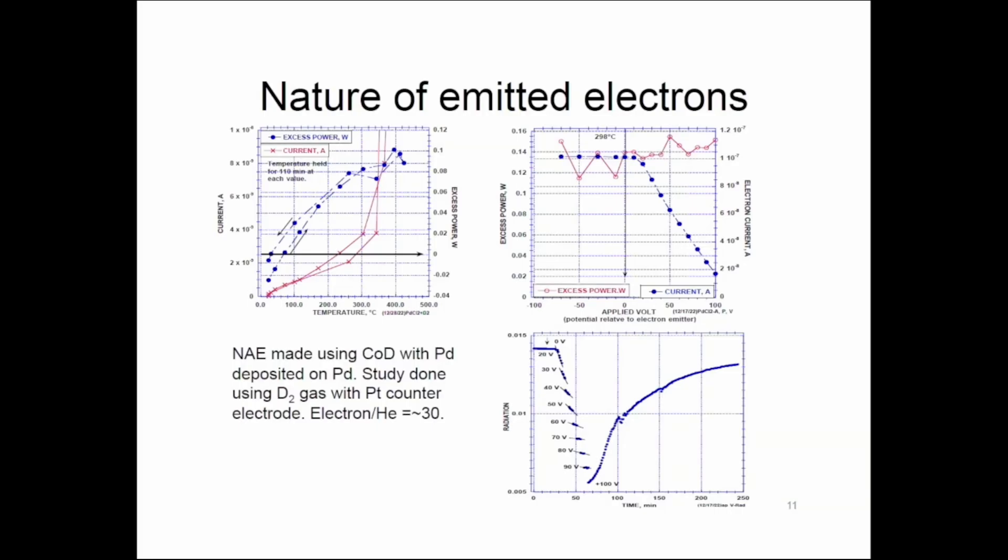If the emitted electrons are measured such that a voltage is applied between the collector and the emitter, so that electrons having energy less than that voltage are returned to the emitter, the power that you measure will go down, or the amount of current will go down. That's demonstrated here as the voltage is increased. So these electrons have a lot of energy, and at least half of them have an energy greater than 100 eV.